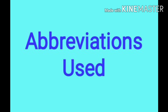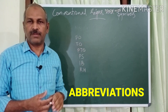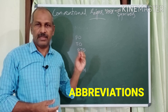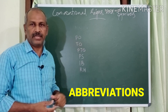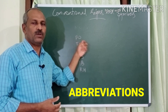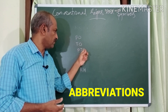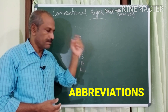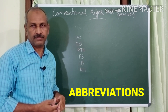Here are certain abbreviations used in the topographic map, all in black color: P.O. means Post Office, T.O. means Telegram Office, P.T.O. means Post and Telegraph Office, P.S. means Police Station, I.B. means Inspection Bungalow, and R.H. means Rest House.